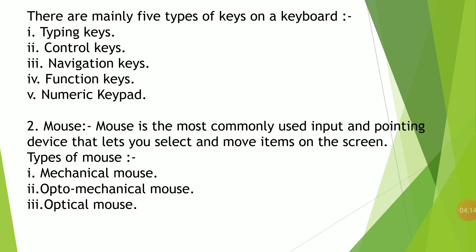Next we have the numeric keypad. The numeric keypad consists of number keys from 0 to 9, the arithmetic operators like addition, subtraction, multiplication, division, as well as a decimal point. It is placed on the right side of the keyboard and is used for entering numbers at a faster pace.